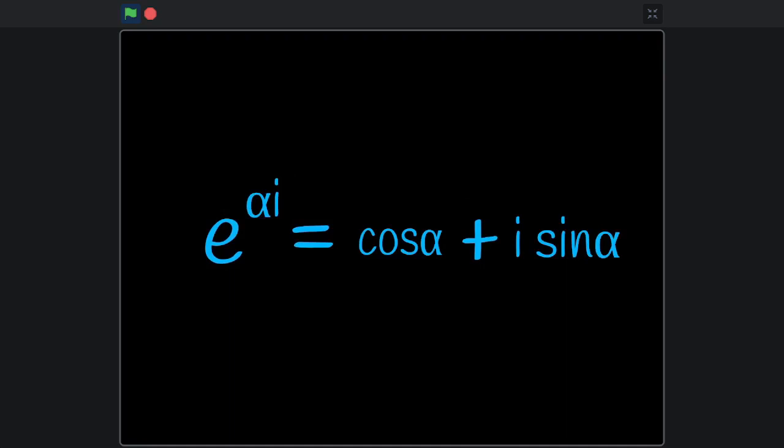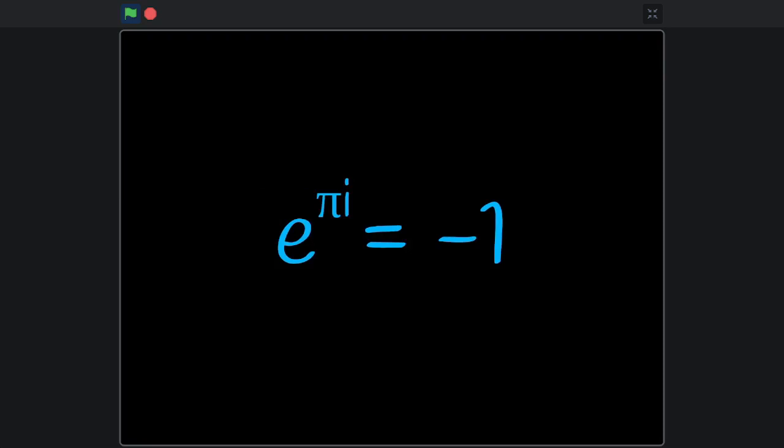The full Euler's formula looks like this. If you replace alpha by pi, then you must remember that the cosine of pi is negative 1, and the sine is zero. Now we can easily see where the previous formula comes from.